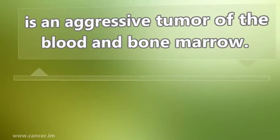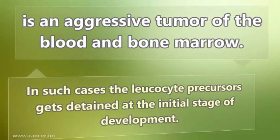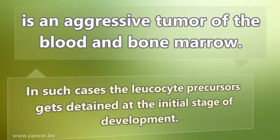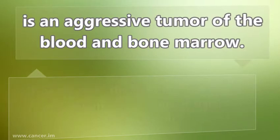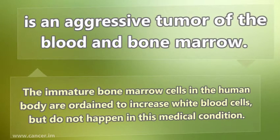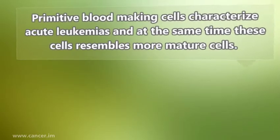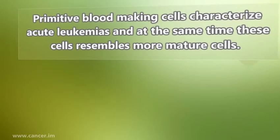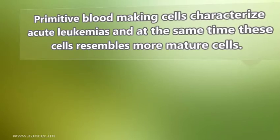In such cases, the leukocyte precursors get detained at the initial stage of development. The immature bone marrow cells in the human body are meant to increase white blood cells, but this does not happen in this medical condition. Primitive blood-making cells characterize acute leukemias, and at the same time these cells resemble more mature cells.